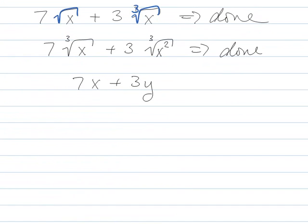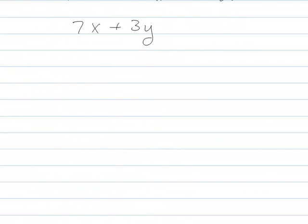It's actually pretty unlikely you're going to get problems as straightforward as the ones we just did. It's more likely that you're going to get problems that you have to simplify and then add together. So it's more likely you'll get something like the square root of 20 plus 2 square root of 45.